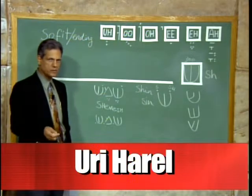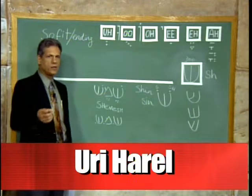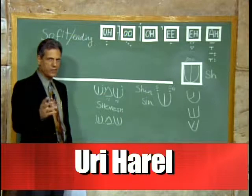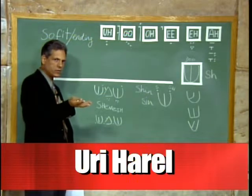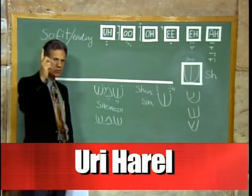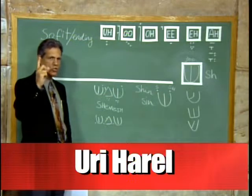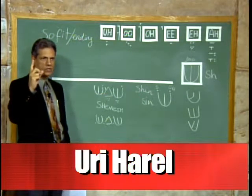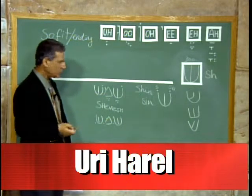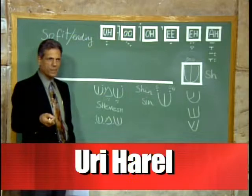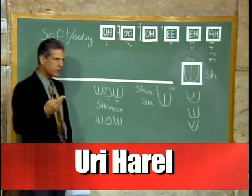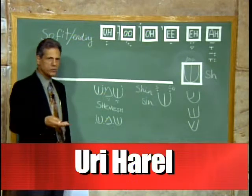This is why on the Chanukah candles you have nine candles: eight candles for each one of the days of the holiday, and then one candle that is usually above the others, called Shamash — the servant — which you light the other candles with. So Shemesh, which is the sun, as bright as it might be, comes from the root whose concept is servant.